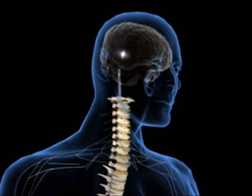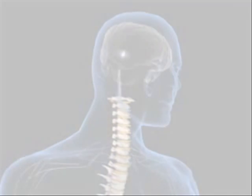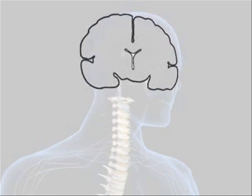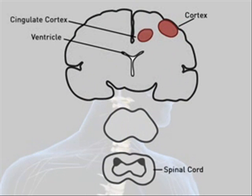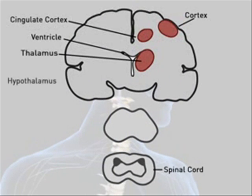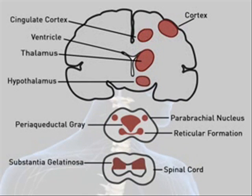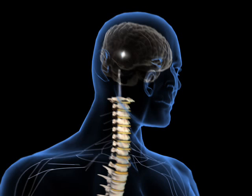Eventually, the pain signal will ascend within the spinal cord and reach parts of the brain — first the thalamus and then out to the cortex. This is where things get very interesting, because it's not until that signal reaches the cortex and other areas of the brain, where it's interpreted in some emotional context, that it is experienced as pain.